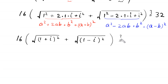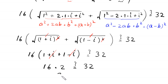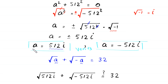These simplify to √((1+i)²) + √((1-i)²) = (1+i) + (1-i) = 2. So we get 16·2 = 32, which equals the right-hand side. Thus a = 512i is a valid solution, and similarly a = -512i is also a valid solution. We have two solutions for this equation.